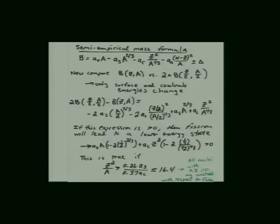Plugging in numbers and working through the algebra, you find that fission produces a net positive energy if Z²/A is greater than about 0.26·Aₛ divided by 0.37·A_C, which works out to roughly 16.4. So if a nucleus has Z²/A ≥ 16.4, energy will be produced through fission. Going back to the binding energy curve, this means that everything above mass 110 is energetically unstable with respect to fission. For those nuclei, splitting them moves you closer to the peak of the binding energy per nucleon curve, generating energy.